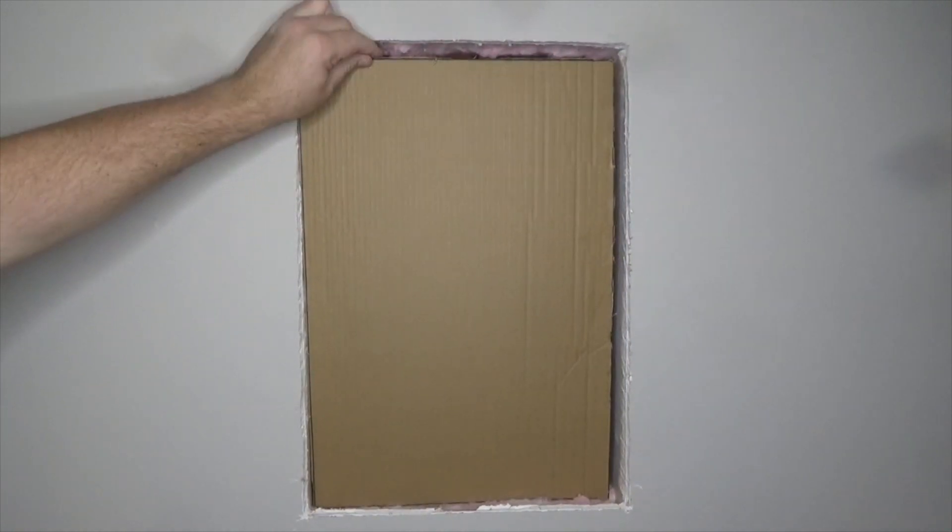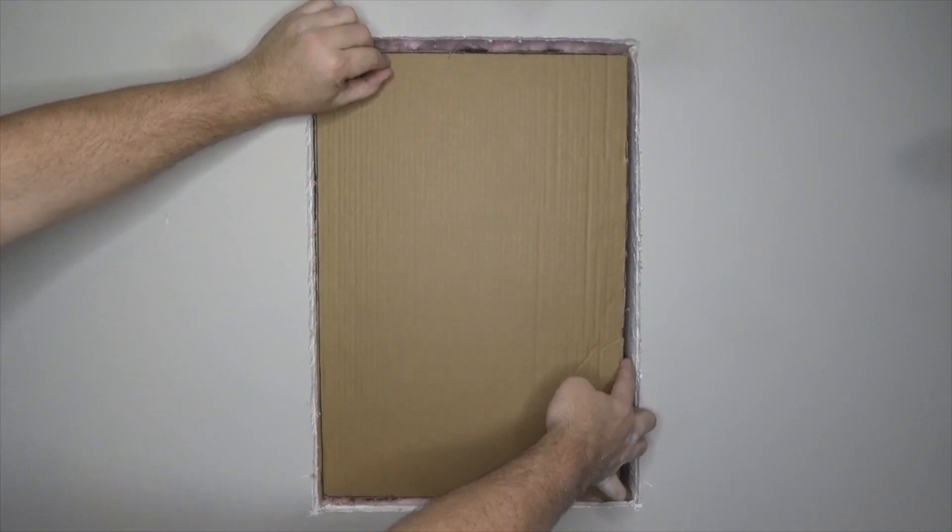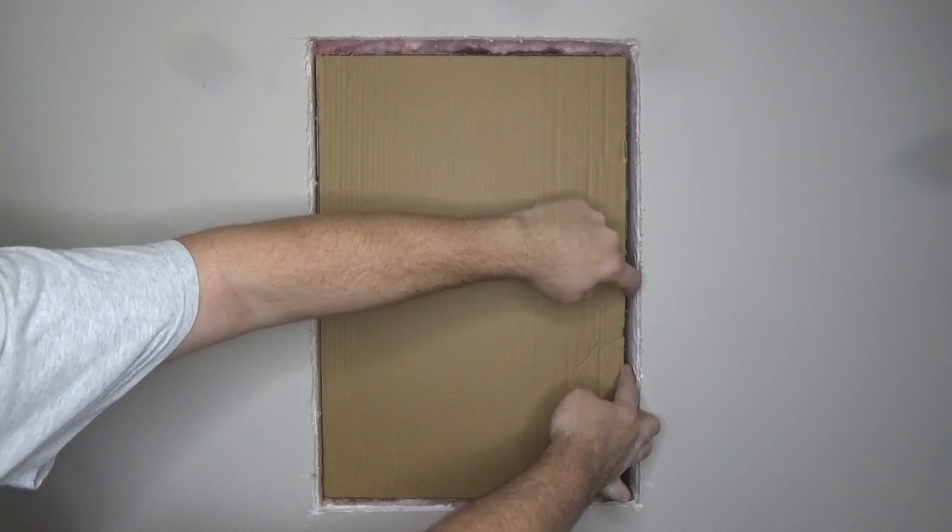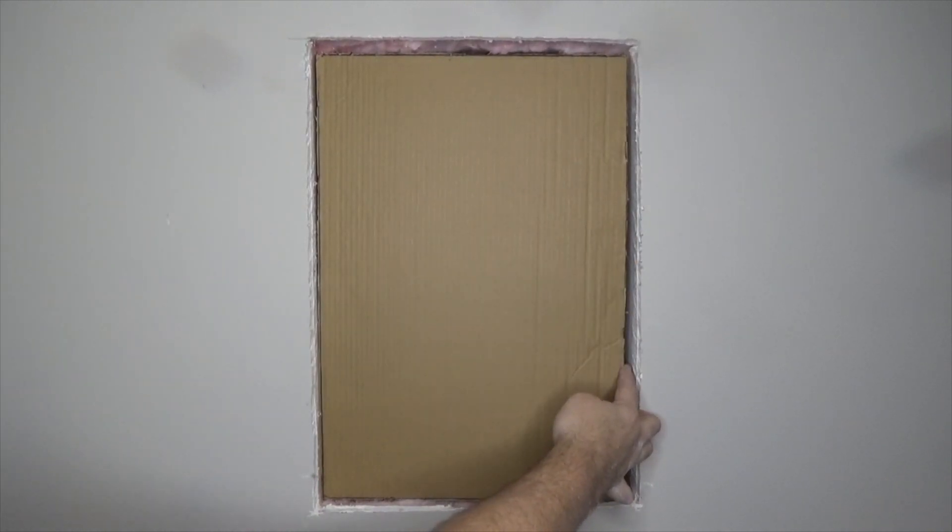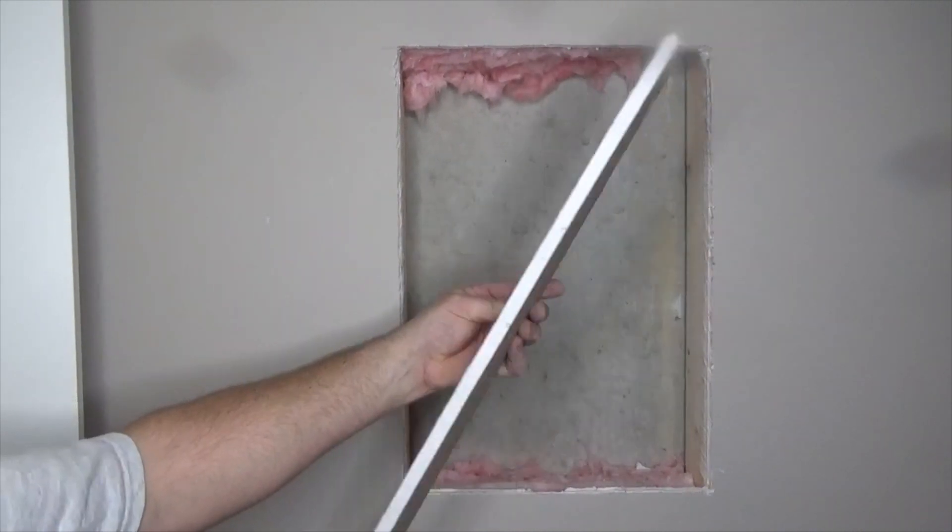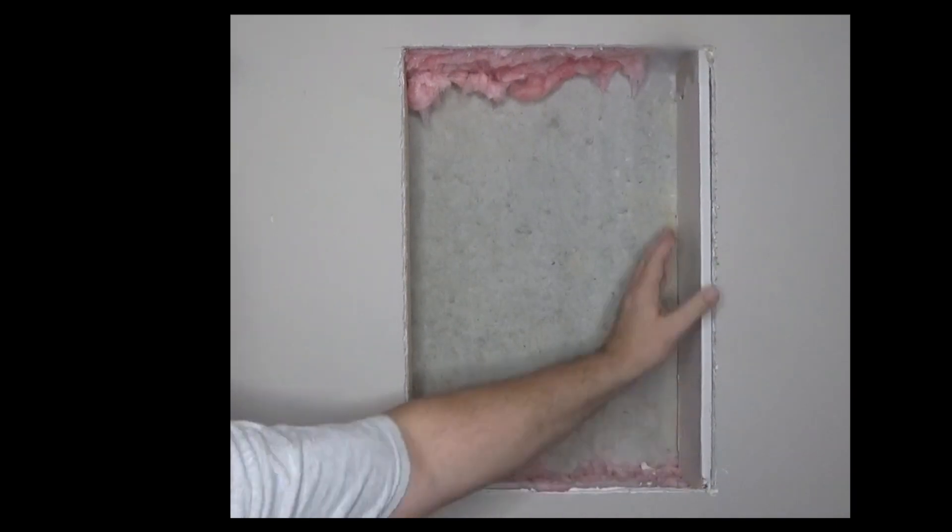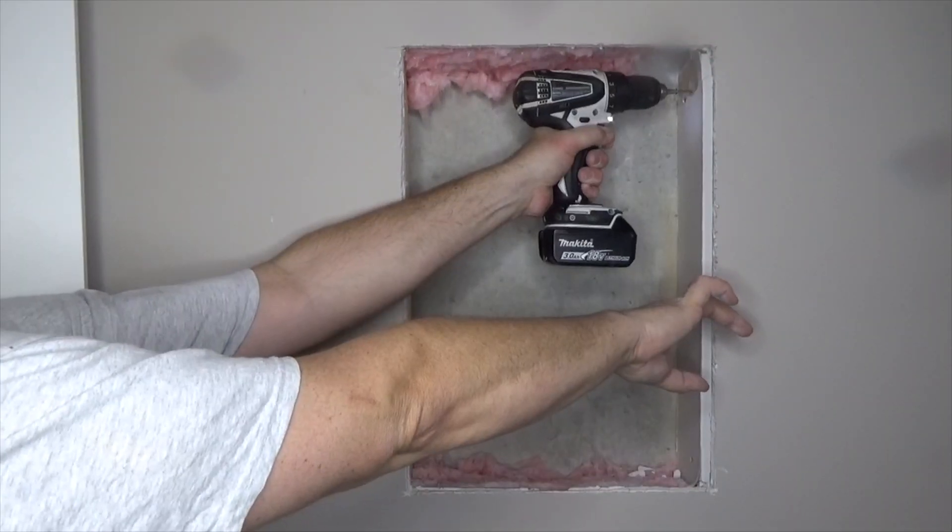Take the cardboard that represents the back of the cabinet and place it in the wall void. Note the gap that needs to be filled. I found that a piece of drywall was the perfect filler for this size gap. Measure, cut, and secure a piece to the stud using drywall screws.